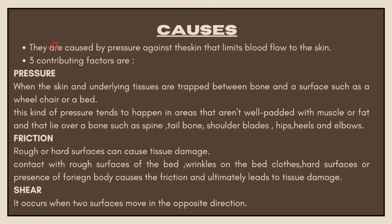Pressure ulcers are caused by pressure against the skin that limits blood flow. When the skin and underlying tissues are trapped between bone and a surface such as a wheelchair or bed, this pressure tends to happen in areas not well padded with muscle or fat — such as the spine, tailbone, shoulder blades, hips, heels, and elbows.